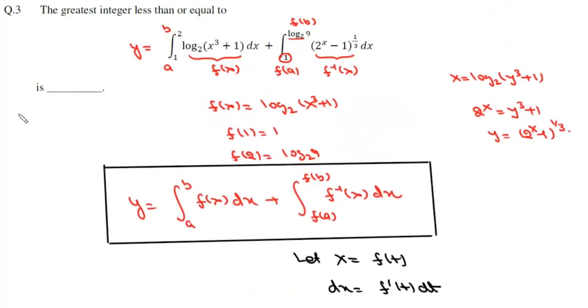So if we calculate this value b·f(b), b is 2 and f(b) is log(8 + 1) which is 9, so log₂(9). This is b·f(b) minus a·f(a), and f(a) is simply log₂(2).